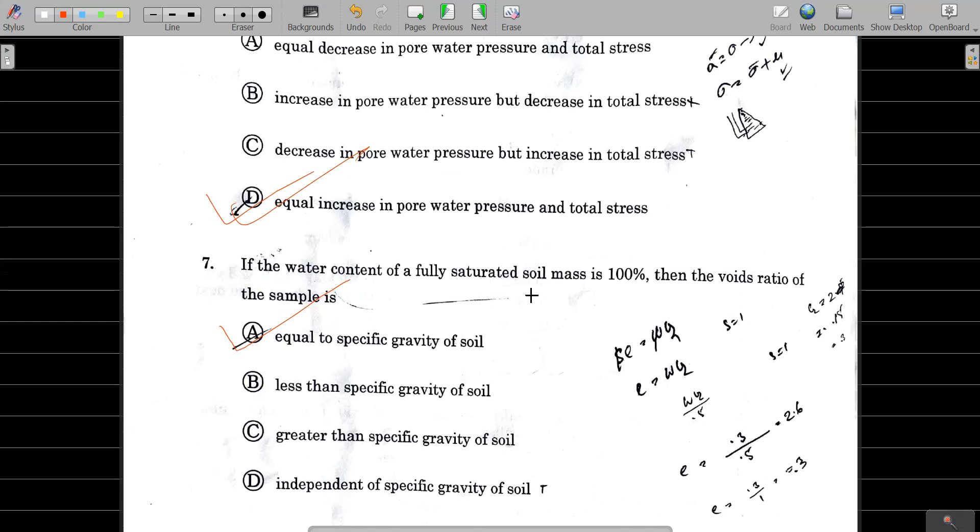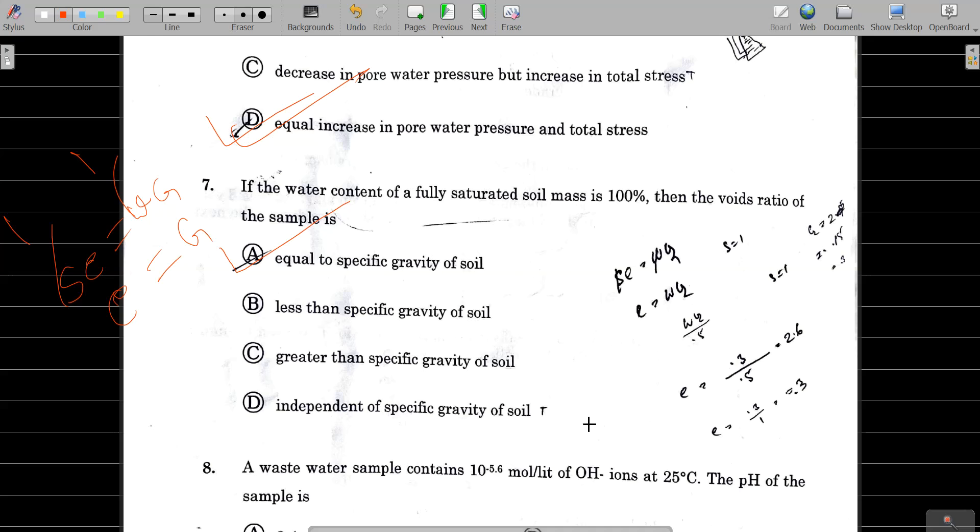Next, this is a very common question. Using the direct relation formula, when degree of saturation is 1 and water content is 100%, then void ratio E will be equal to specific gravity of the soil times water content.